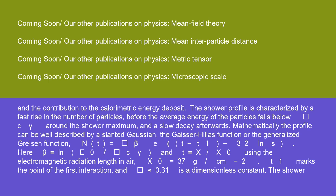Mathematically, the profile can be well described by a slanted Gaussian, the Gaisser-Hillas function, or the generalized Greisen function, N(t) equals epsilon beta E (t minus t_1)^(beta minus 1) e^(minus t plus t_1) S^(minus 3/2 ln S). Here, beta equals ln(E_0 / epsilon_C_gamma), and t equals x / x_0, using the electromagnetic radiation length in air, x_0 equals 37 g/cm^2. t_1 marks the point of the first interaction, and epsilon almost equal to 0.31 is a dimensionless constant.